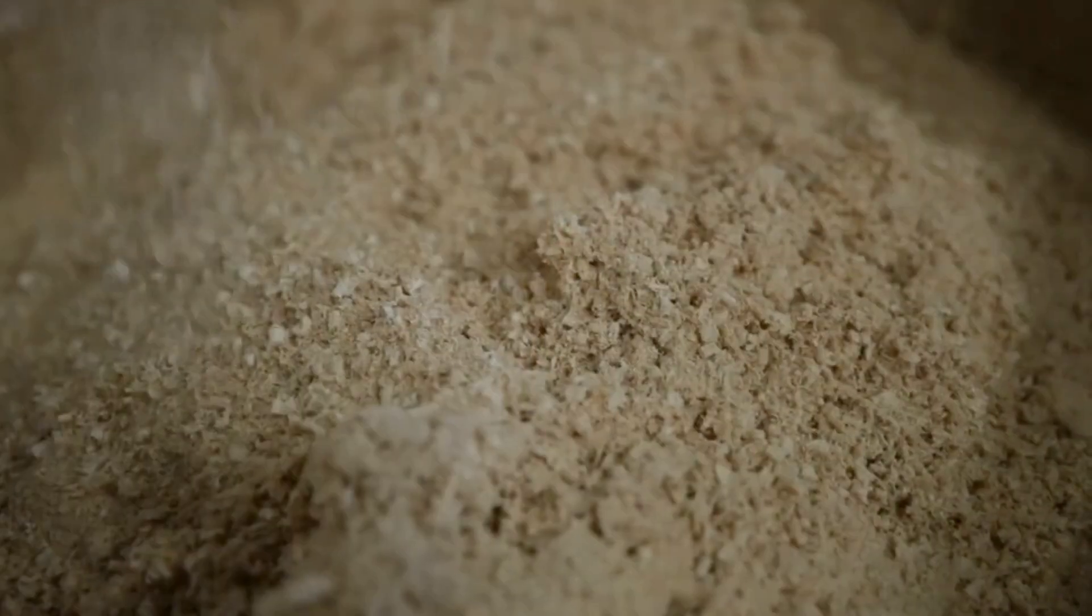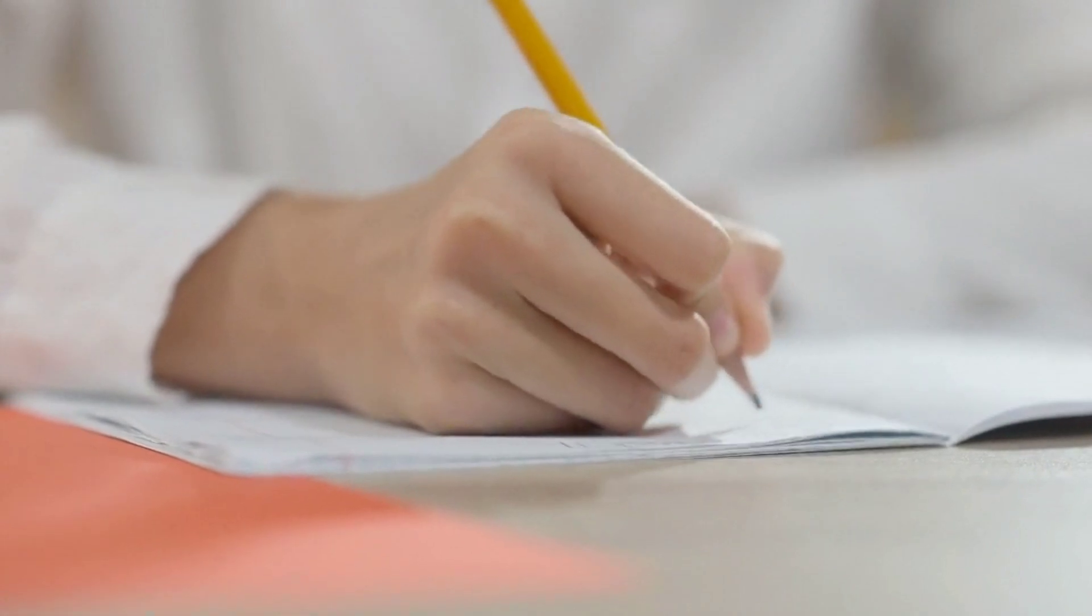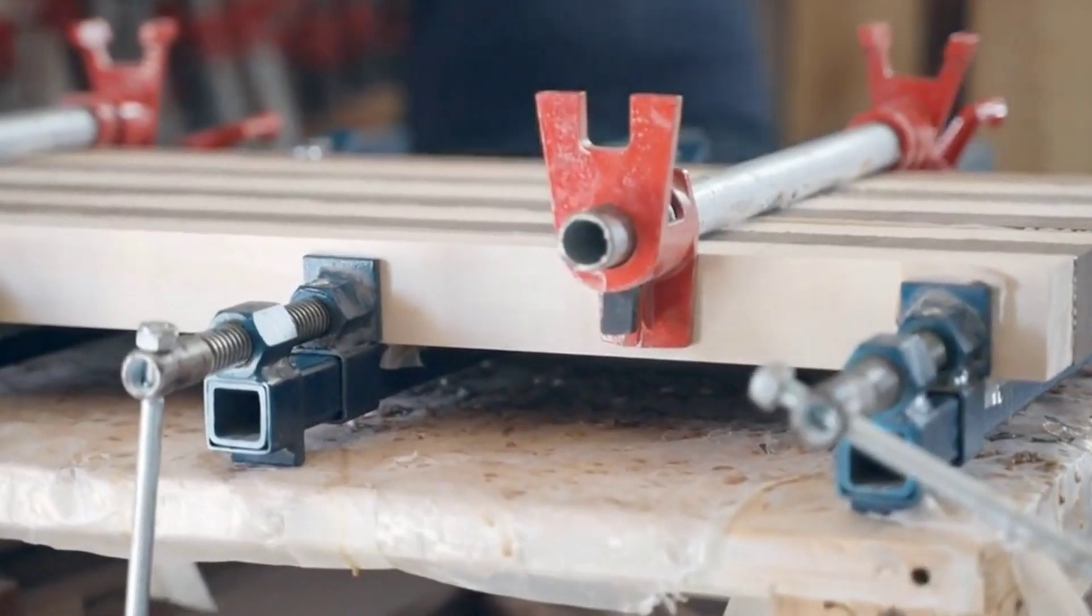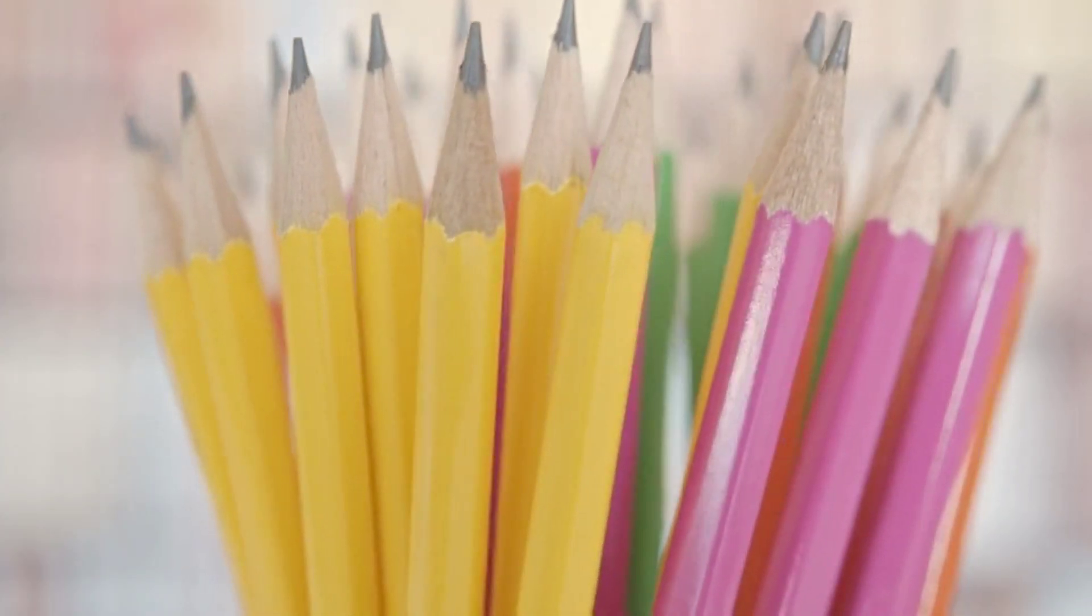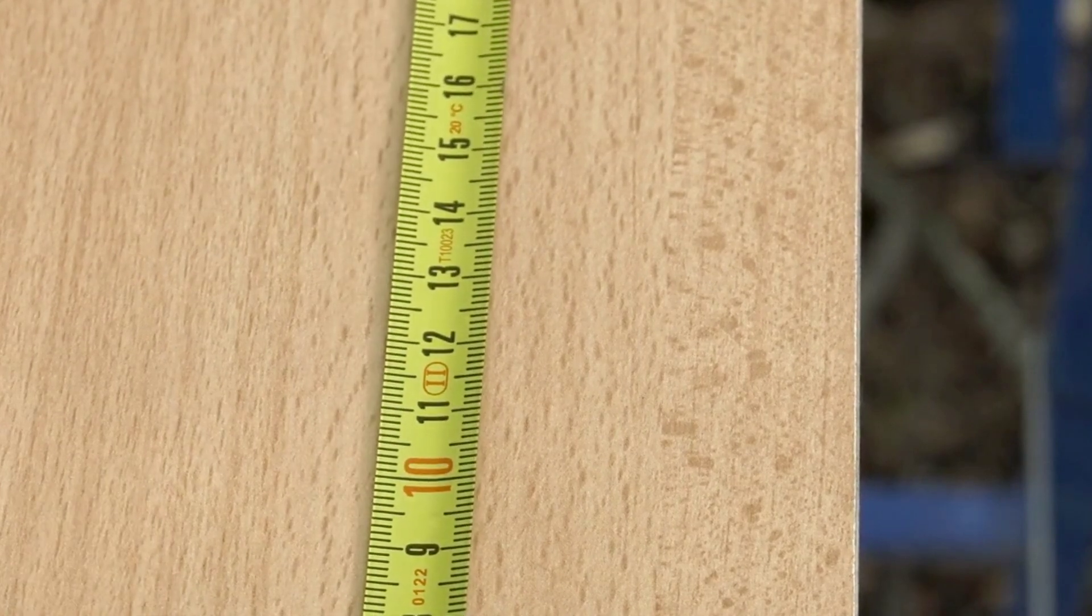The blending of graphite and clay isn't as simple as just stirring them together. They are mixed with water to form a paste, which is then refined to remove any remaining impurities. This process ensures a uniform consistency, which in turn leads to a smoother writing experience. This paste, now as smooth as silk, is then extruded under high pressure through a metal die. What comes out on the other side are long, thin rods that will soon become the core of our pencils. These rods are then cut to the precise length of a standard pencil.